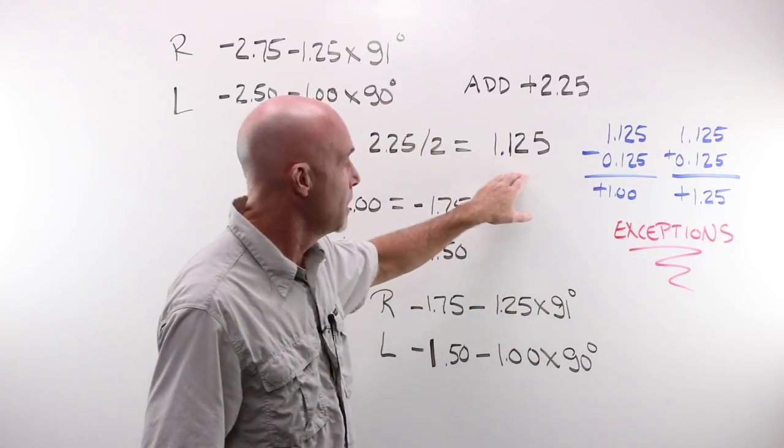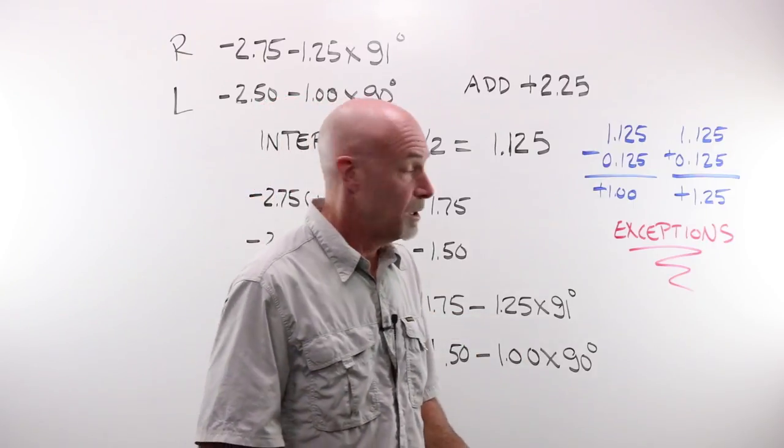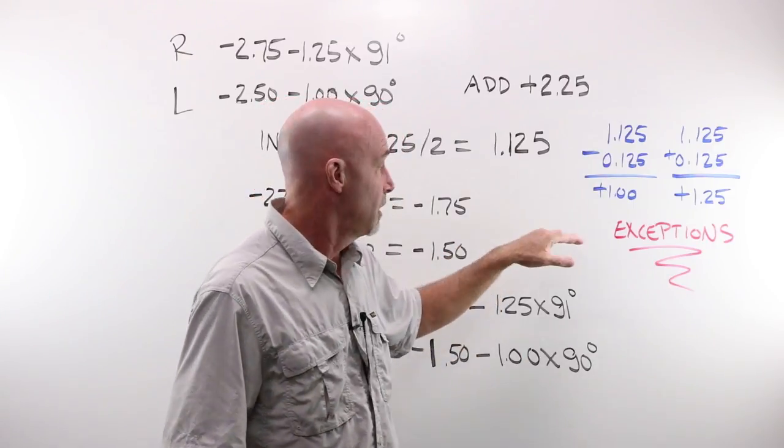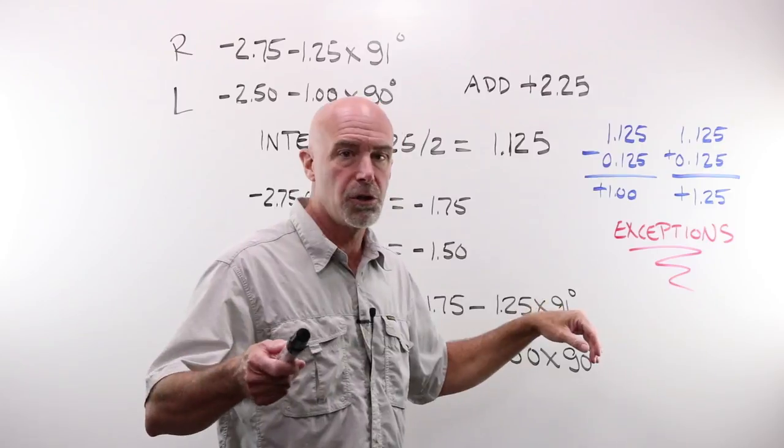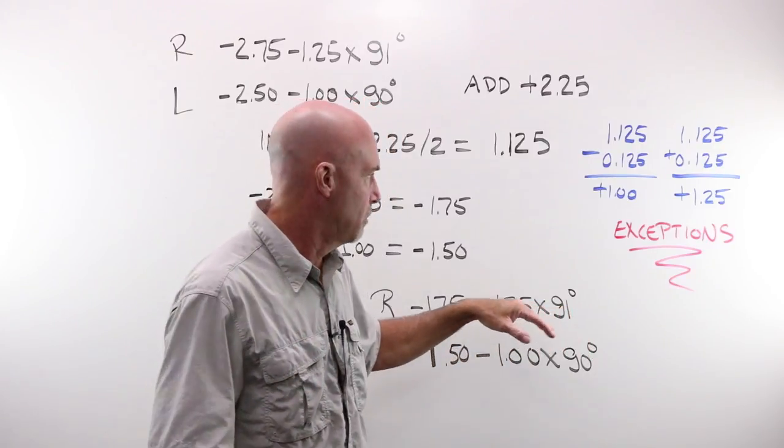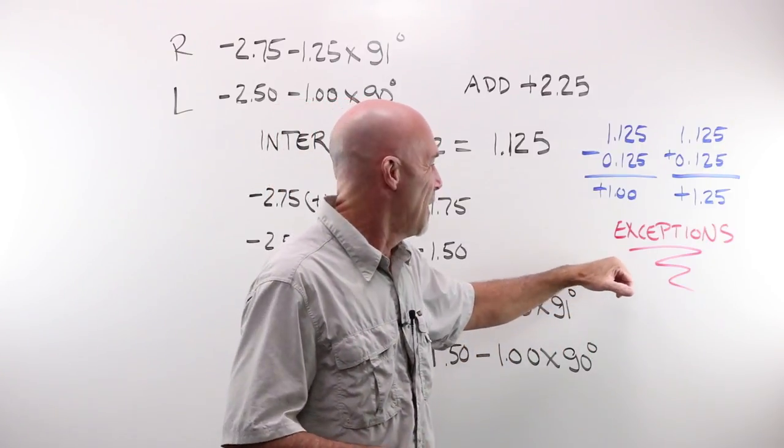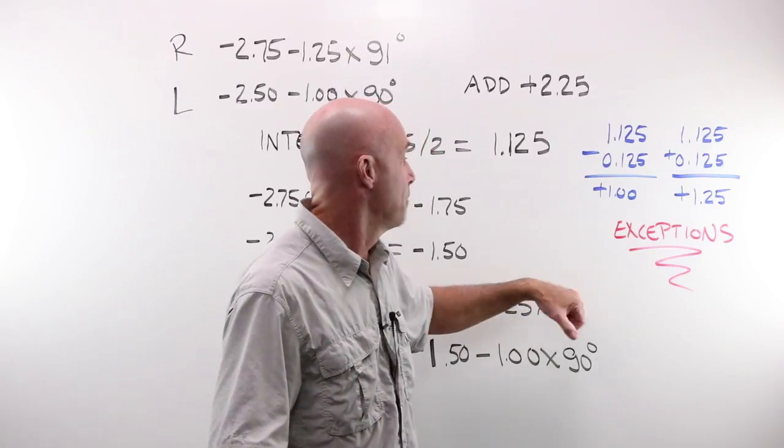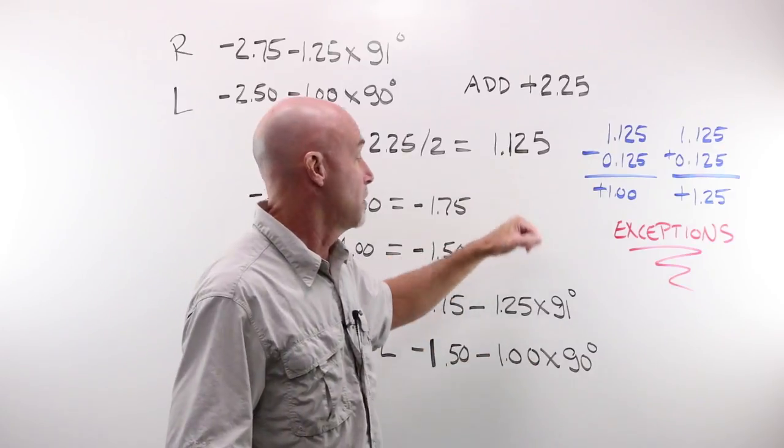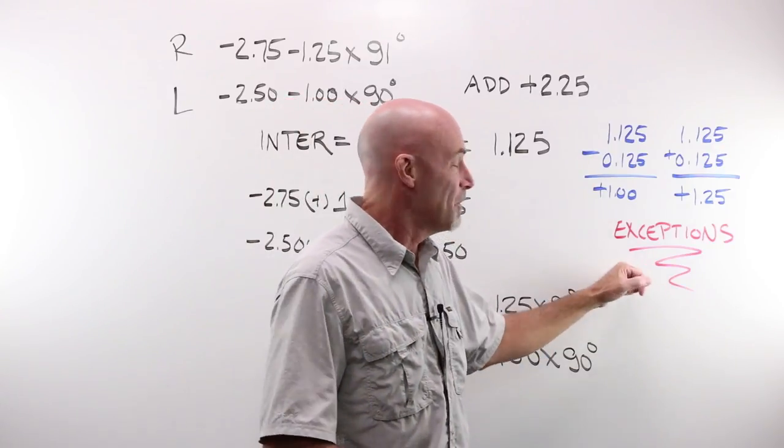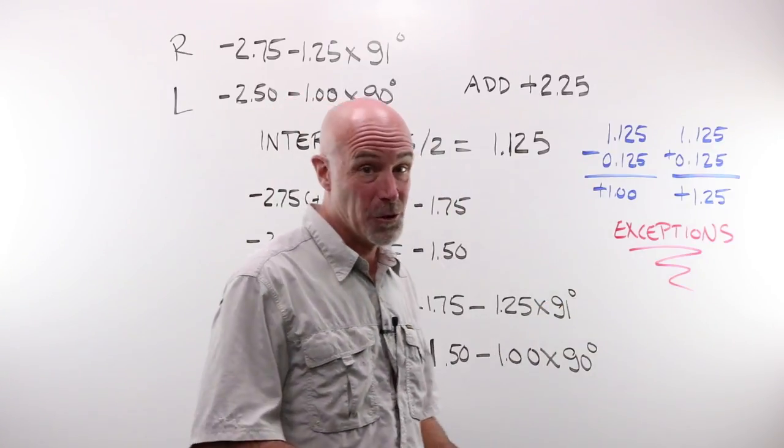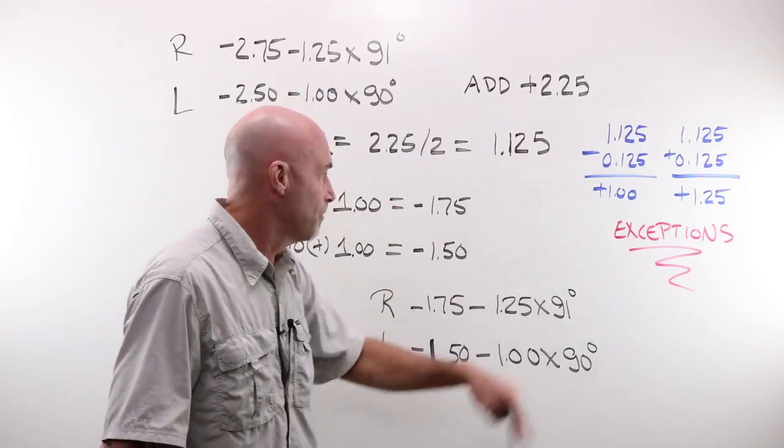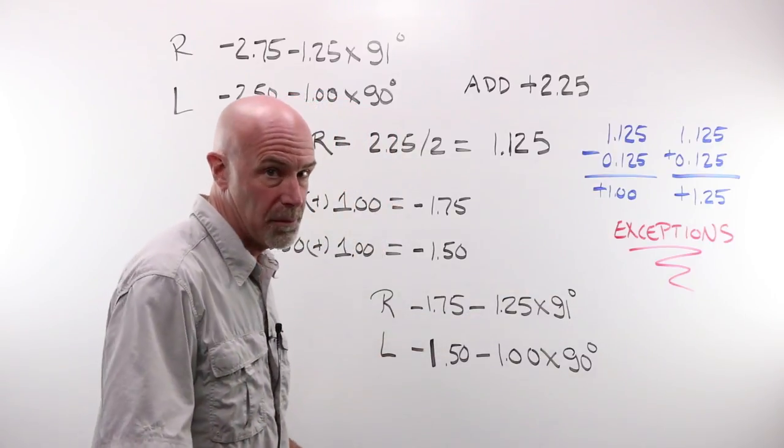There are exceptions to the eighth diopter step rules. Trial lenses come in this, and there are some people, especially target shooters, pistol target shooting people, the good ones, will go and have refraction done to the eighth diopter step. And you can certainly send that into a lab, and you can certainly check that in the lens meter. But of course, your stock single vision lens, your bread and butter, your money makers, those are going to be coming in quarter diopter steps.